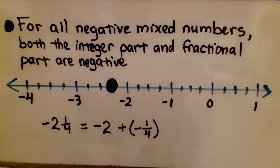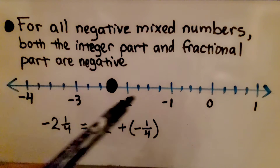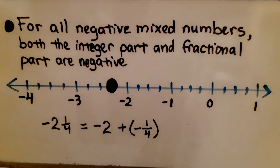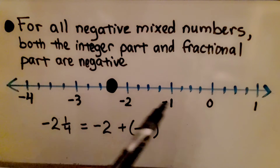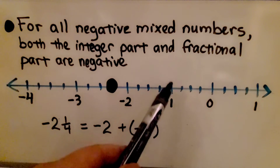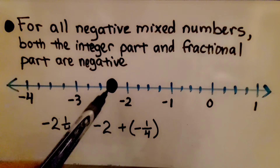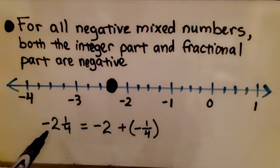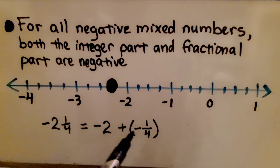Keep in mind: for all negative mixed numbers, both the integer and the fractional part are negative. If we have negative 2 and 1 fourth, that's negative 1, negative 2, negative 2 and 1 fourth on the number line. Negative 2 and 1 fourth is equal to negative 2 plus negative 1 fourth.